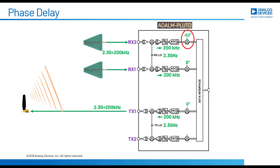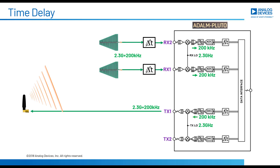When we calculated that phase shift, we also calculated what that time delay would be. Just like phase delay, there are a couple places where we could instead put the time delay into our system. Oftentimes, we might put that delay directly on the RF signal coming in — that's exactly what we would do for analog beamforming. Or we could put that time delay after the digitizer, and that's what we do for digital beamforming. We could also put the delay in the LO or between the mixer and the ADC, but let's just focus on the two highlighted spots for now.